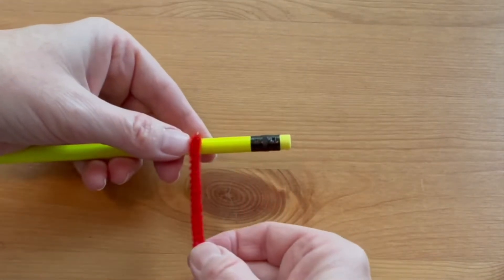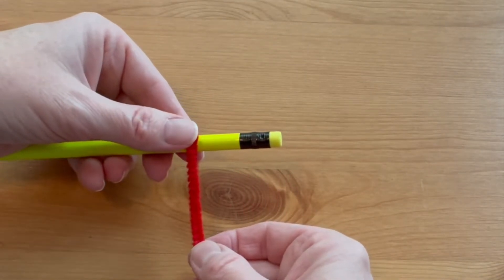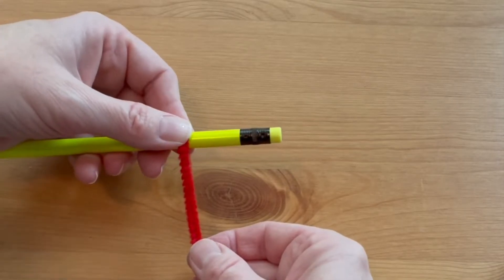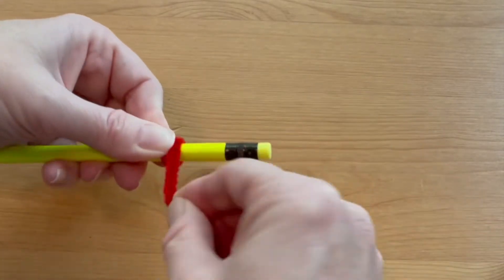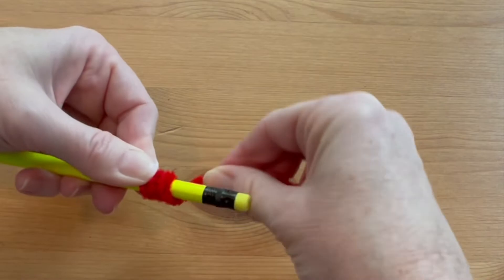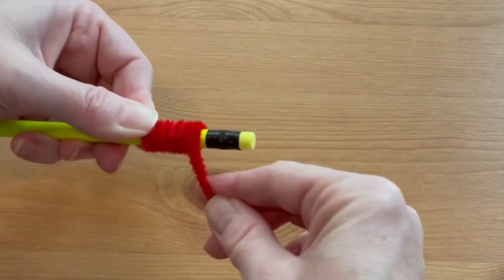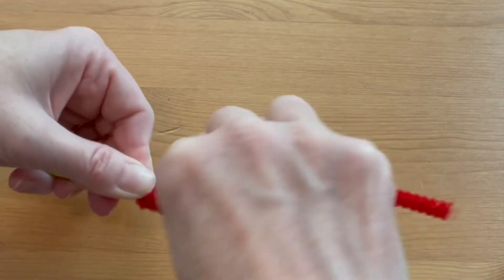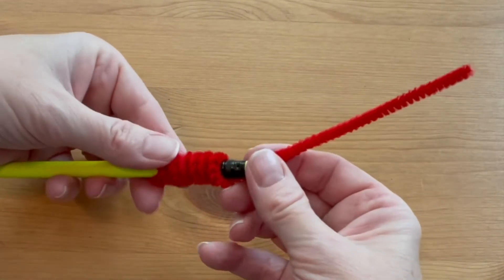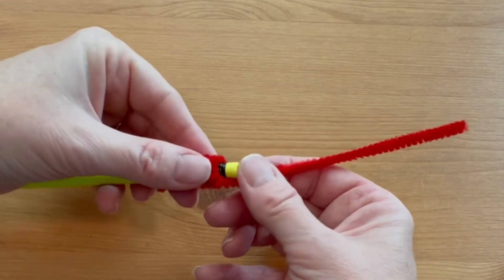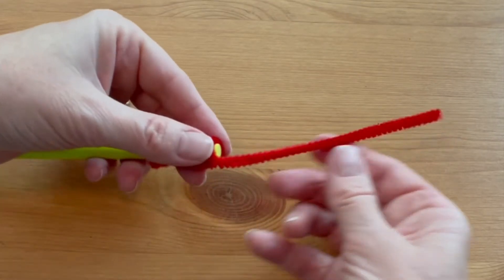To make the red heart pencil, hold the end of a pipe cleaner just a few inches from the end of a pencil. Coil it around as if you're making a spring, one coil right next to each other about seven times, and then push that coil up clear to the end of the pencil so the eraser is covered.